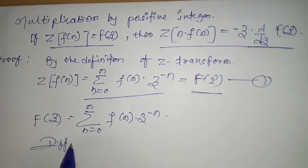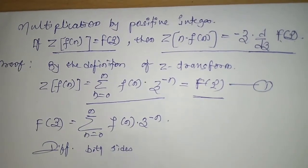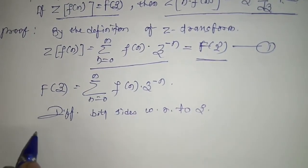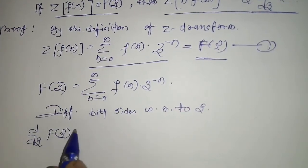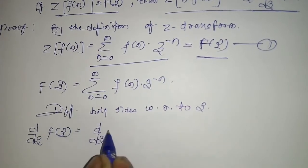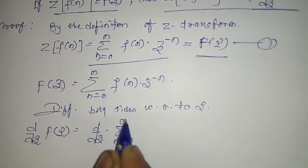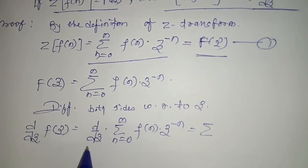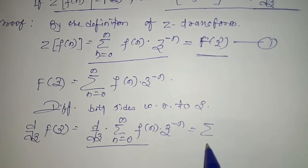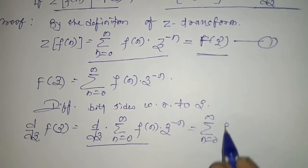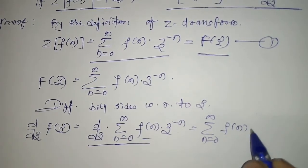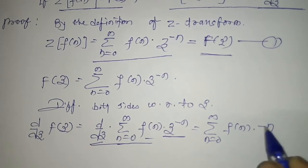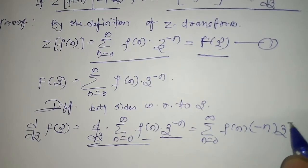So we can see this is the derivative of Z-transform. D by DZ of capital F of Z is equal to D by DZ of the whole term, summation N equal to 0 to infinity, F of N, Z to the power minus N. We can write this as summation N equal to 0 to infinity, F of N, and the derivative of Z to the power minus N will be minus N, Z to the power minus N minus 1.